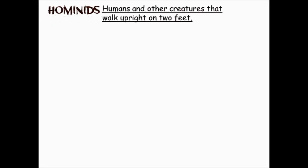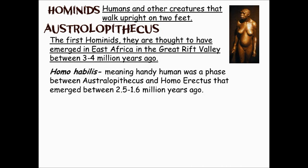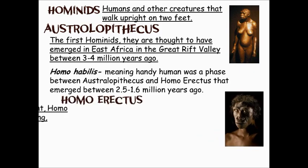All of these ancestors are known as hominids — humans and other creatures that walk upright on two feet. The earliest was Australopithecus, or Lucy. These first hominids are thought to have emerged in East Africa, in the Great Rift Valley, around three to four million years ago. Then comes Homo habilis — a Latin word meaning 'person with ability,' or handy humans — somewhere between 2.5 and 1.6 million years ago. Then Homo erectus, about 1.8 million years ago, meaning 'upright walking human being,' and as you can see, the hominid is starting to look more human-like.